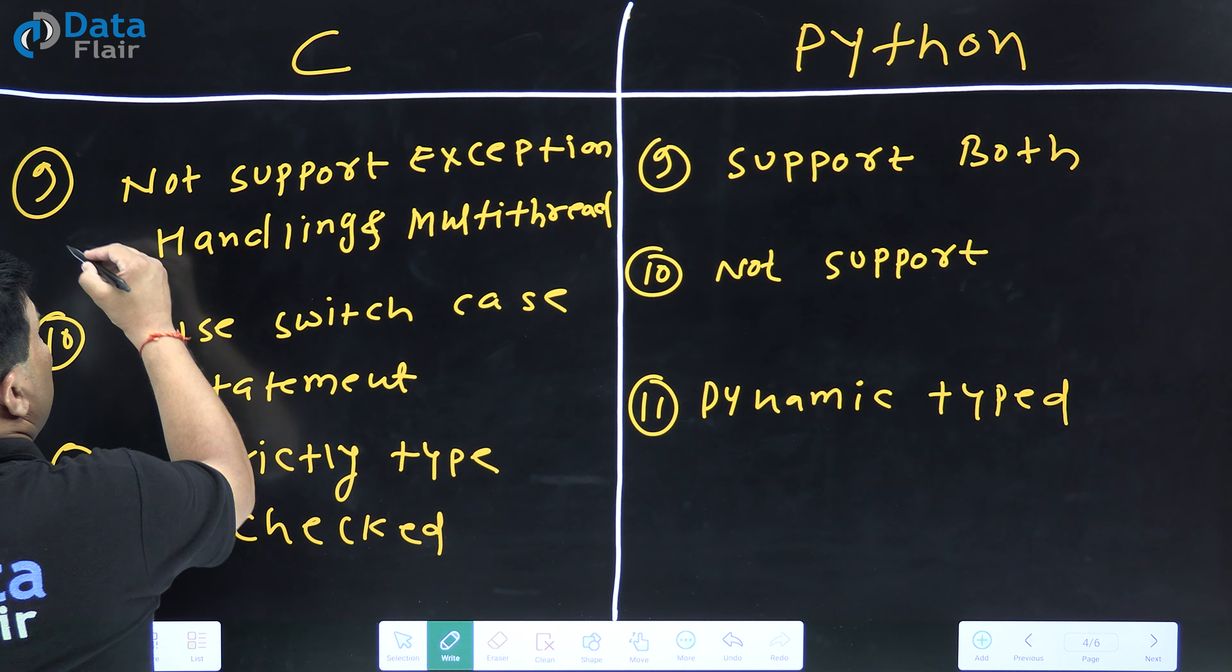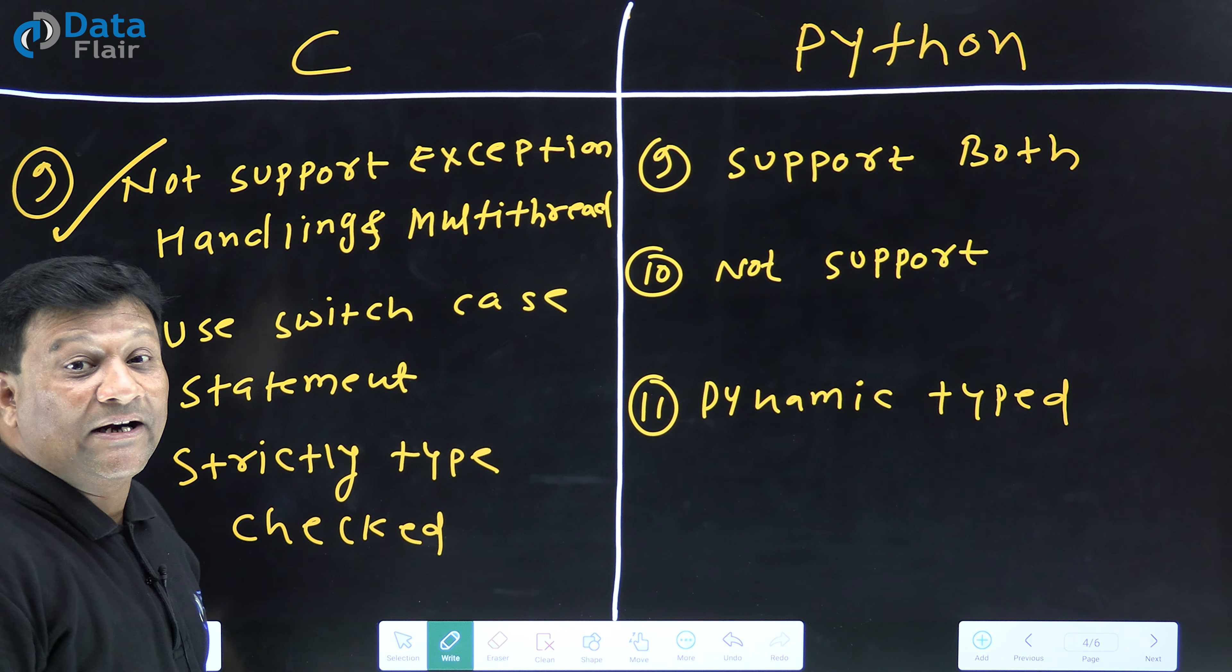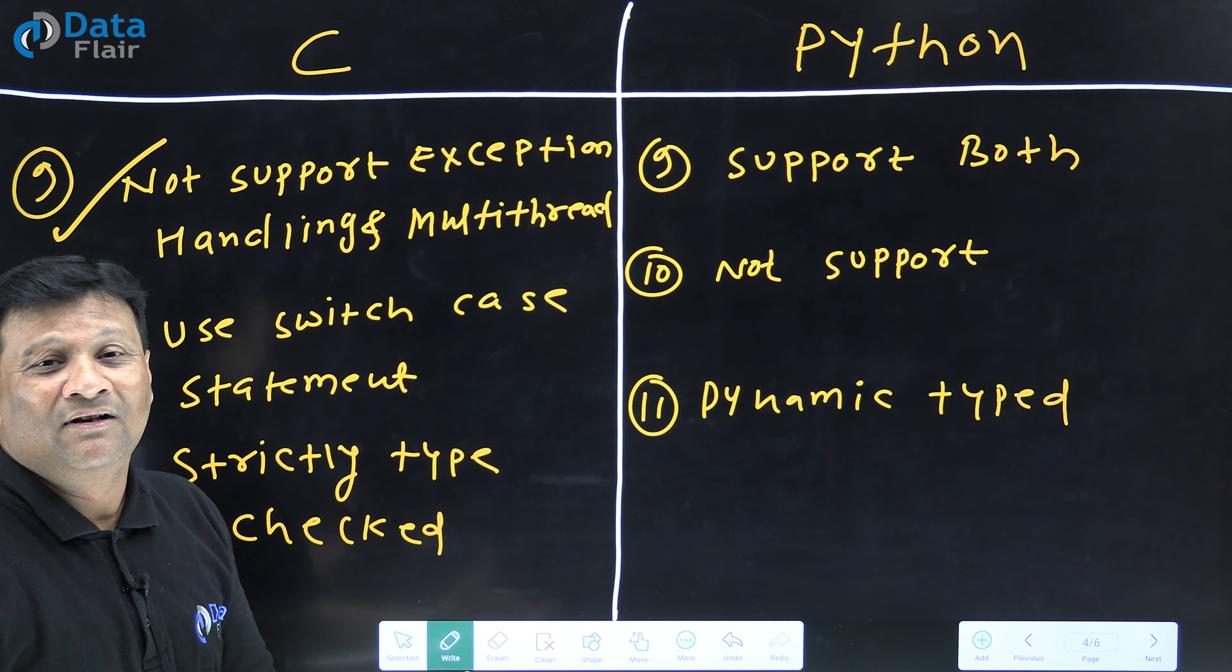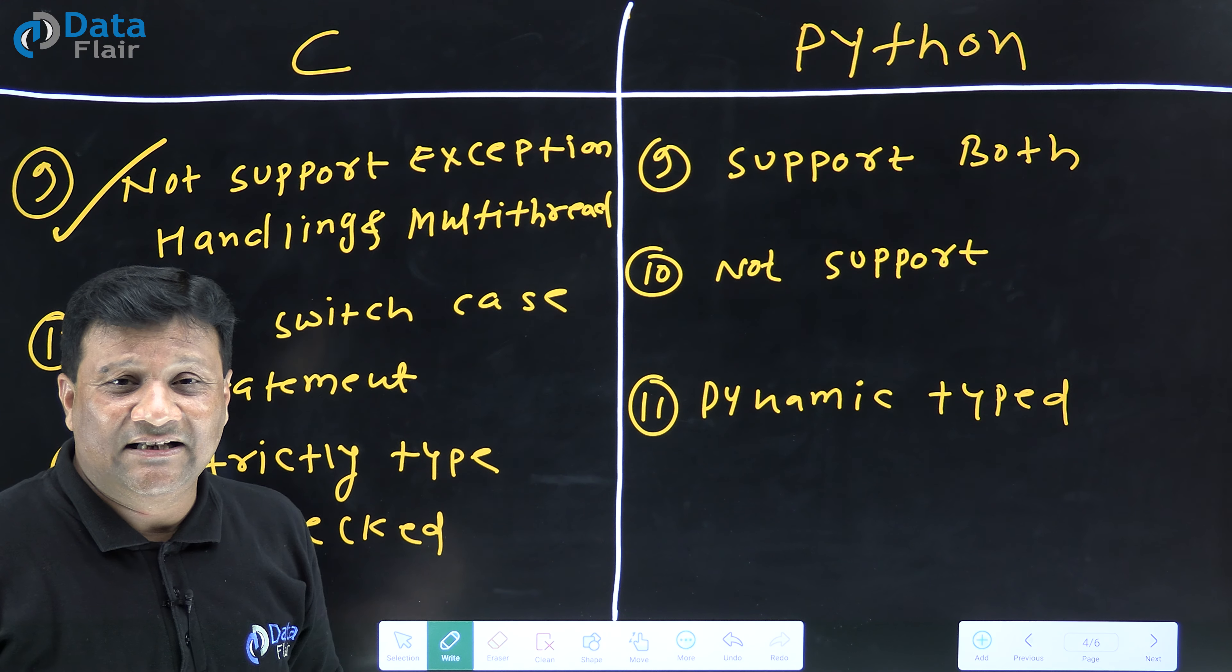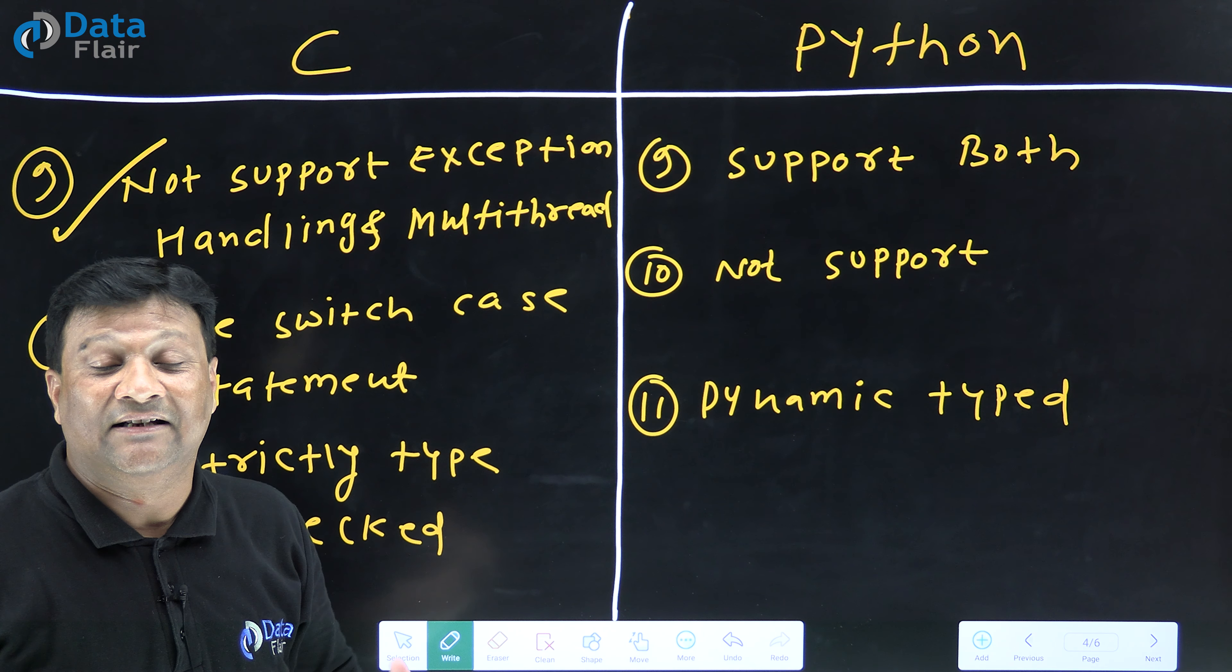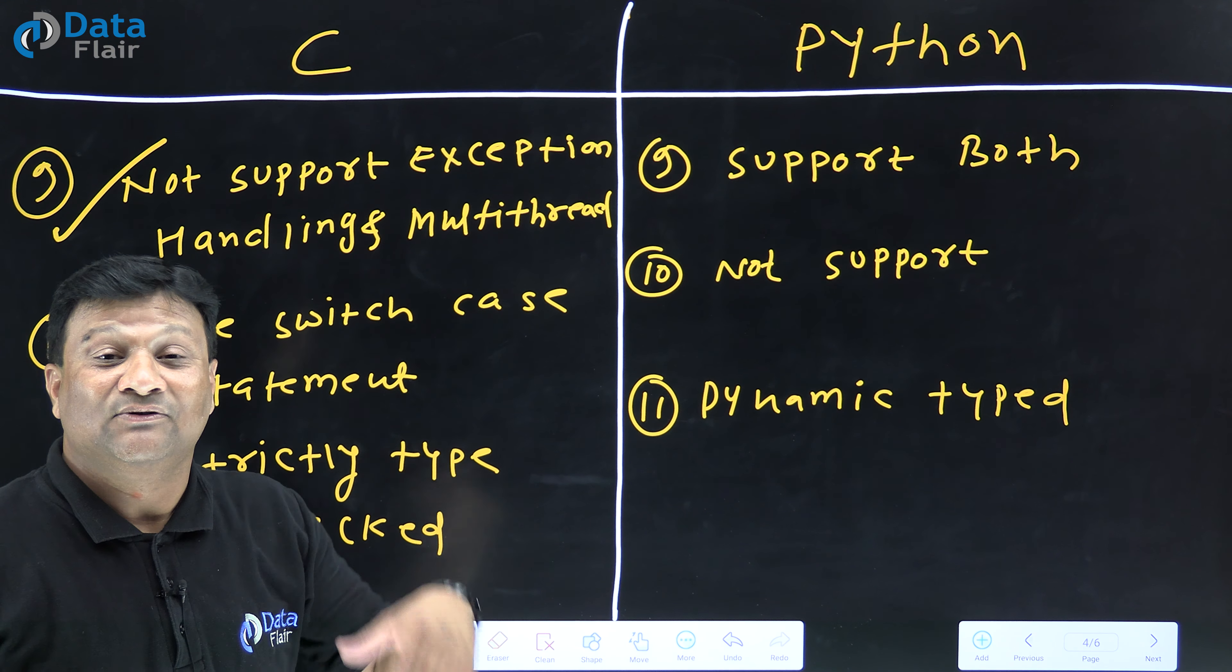Another important difference: C does not support exception handling and multi-threading, which is one of the most important requirements of today's era. Exceptions occur at runtime in applications - runtime errors that occur, which are called exceptions. An exception means an unexpected error which occurs at runtime in a program.